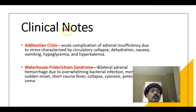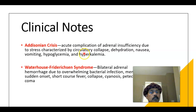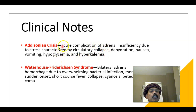There is an acute condition called Addisonian crisis — an acute complication of adrenal insufficiency due to stress, characterized by circulatory collapse, dehydration, nausea, vomiting, hypoglycemia, and hyperkalemia. Stress triggers may include road traffic accidents, surgery, pregnancy, or sudden discontinuation of long-term steroid use. Patients should receive health education and be instructed on how to manage steroids during stress by increasing their steroid intake.